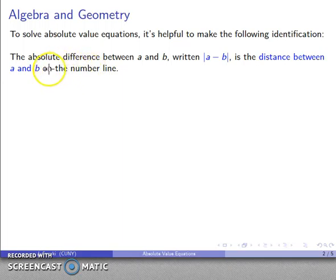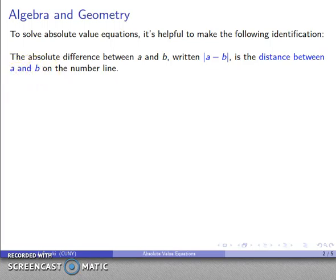The absolute difference between two numbers a and b, which we write as the absolute value of a minus b, is the distance between a and b on the number line. You might have been told that the absolute value represents the distance from zero — and that's true — but it's part of a more general concept: the absolute value tells you the distance between two things.